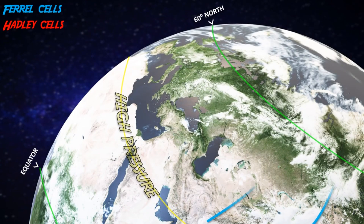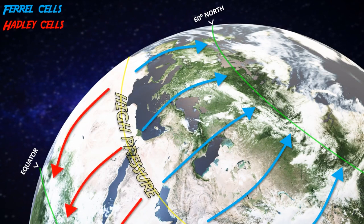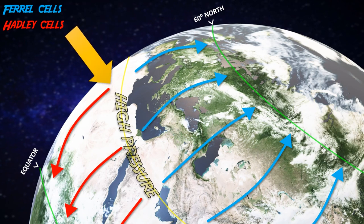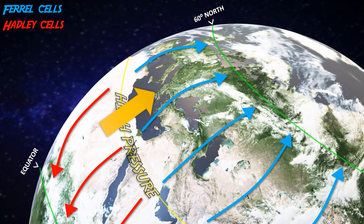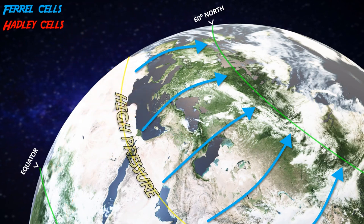The Ferrel cells want to move the warm air to 60 degrees north, and the Hadley cells want to move the warm air to zero degrees along the equator. Given that Sirocco winds are a weather event originating in North Africa and blowing across the Mediterranean Sea to southern Europe, we will only focus on the Ferrel cells.